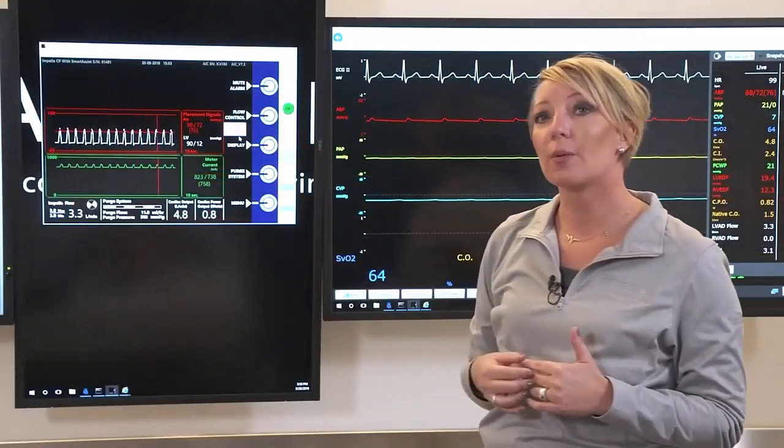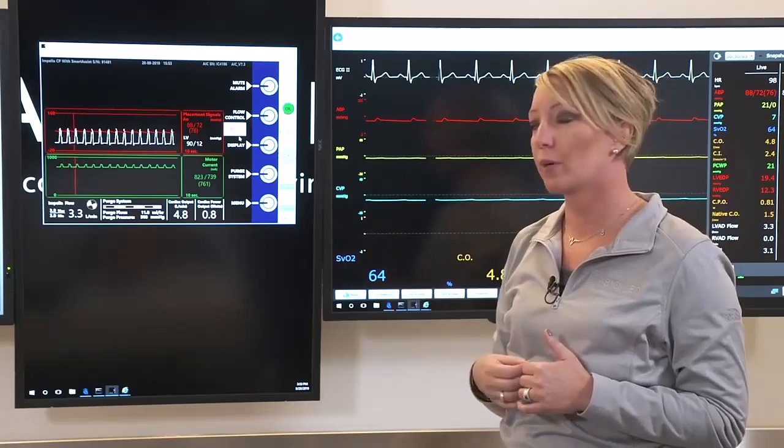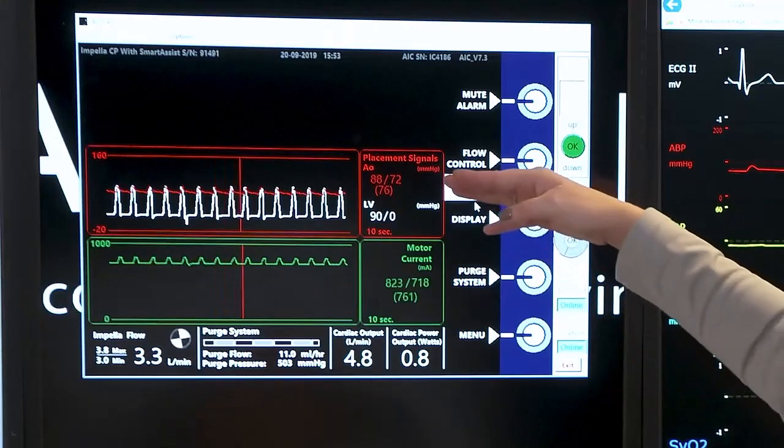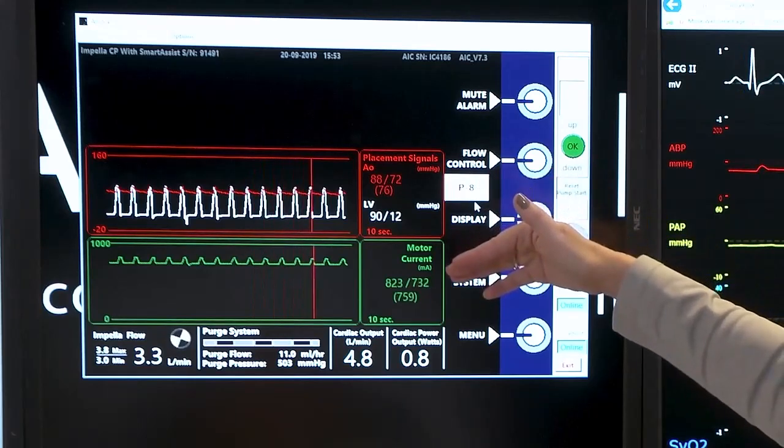You'll also notice that we have a red waveform, or our placement signal waveform. So this is going to give us two different waveforms. It's going to give us the AO waveform and it's going to give us an LV waveform.